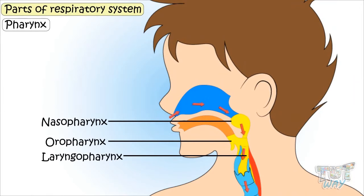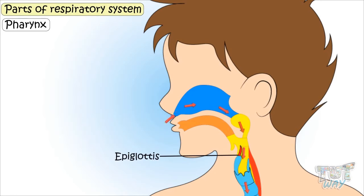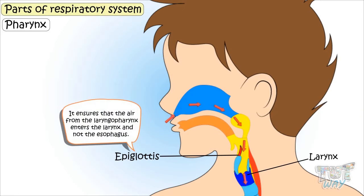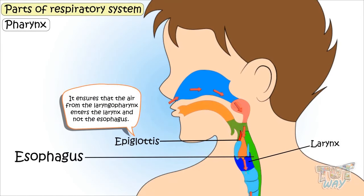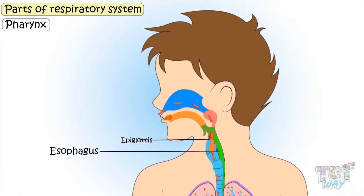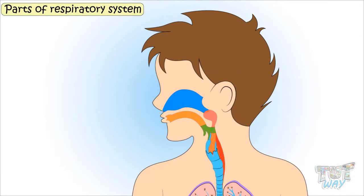Once the air reaches the laryngopharynx, the part called the epiglottis diverts the air to the larynx. The epiglottis performs a very important function: it ensures that air from the laryngopharynx enters the larynx and not the esophagus. The food we swallow enters the esophagus, and the air we breathe enters the trachea — and the part that ensures this is the epiglottis.